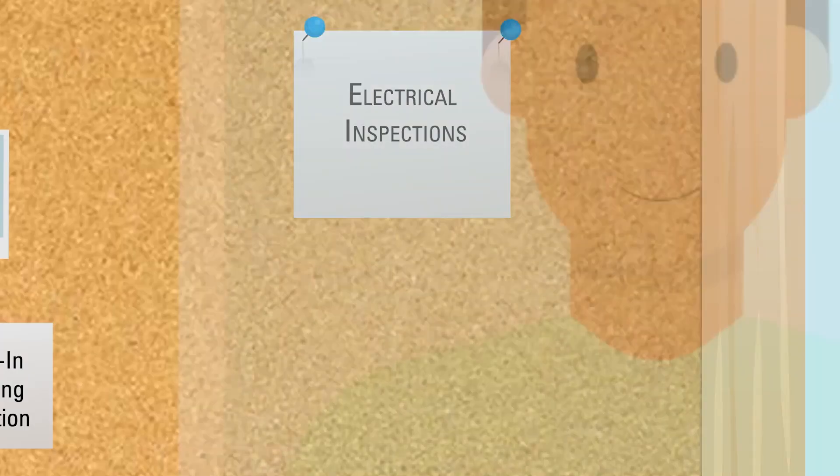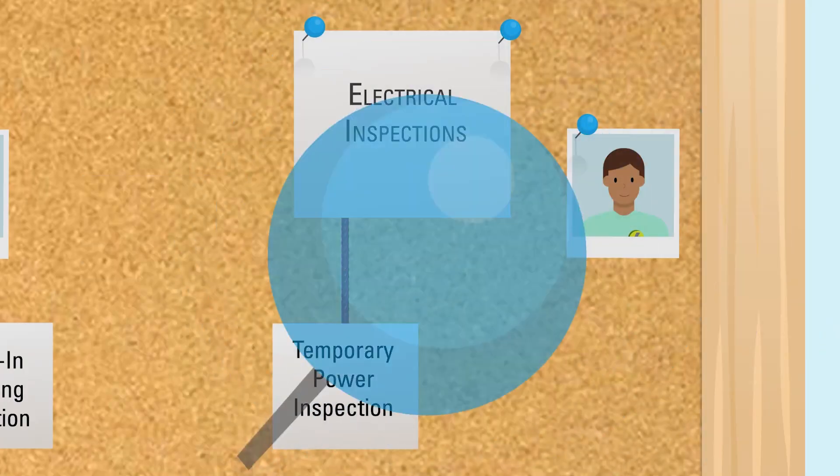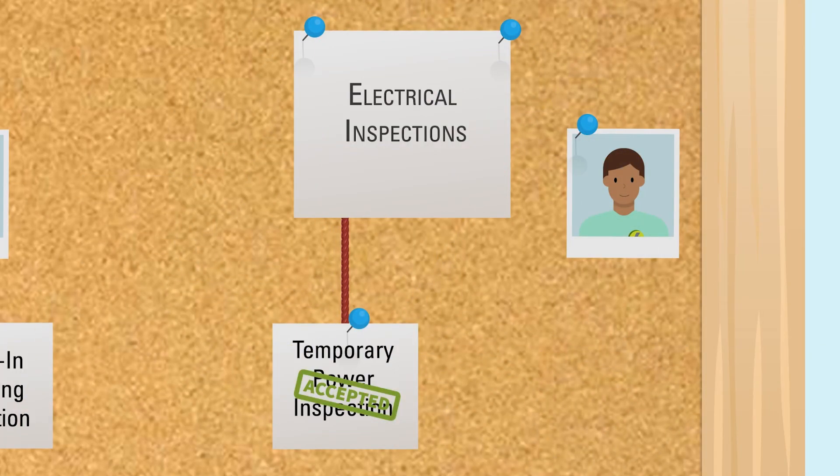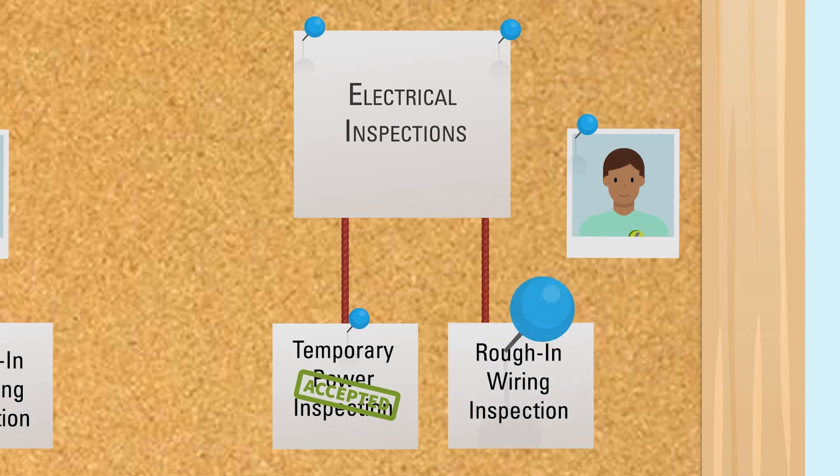For electrical, you may need to install temporary power to your site so your builders can run their equipment. If so, you will need to book a temporary power inspection. For all builds, a rough-in wiring inspection is required.